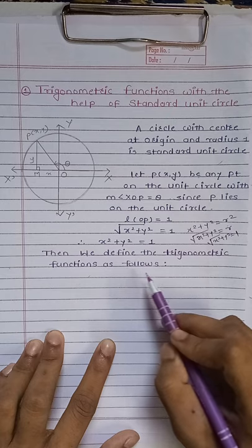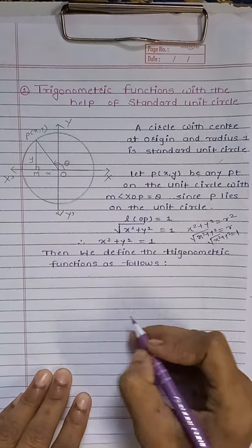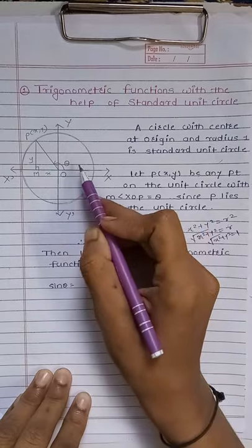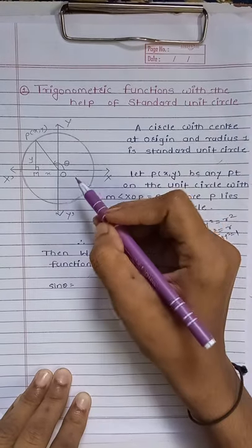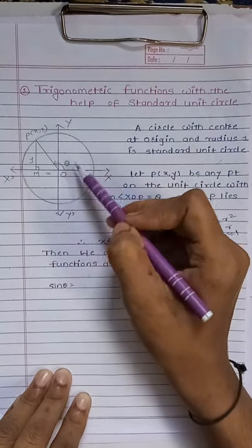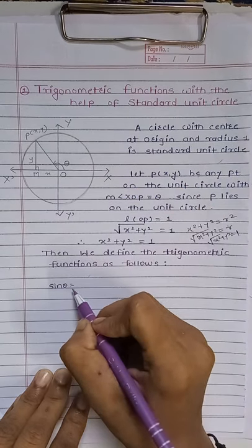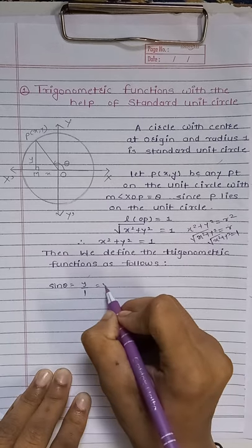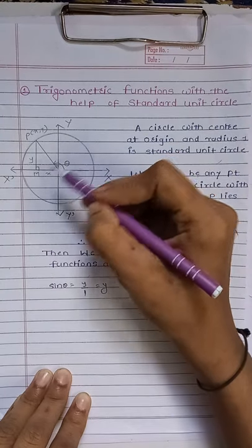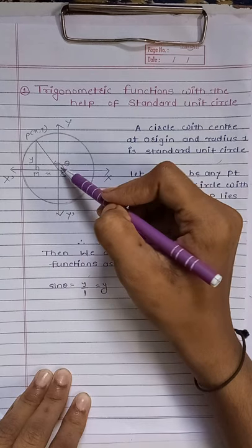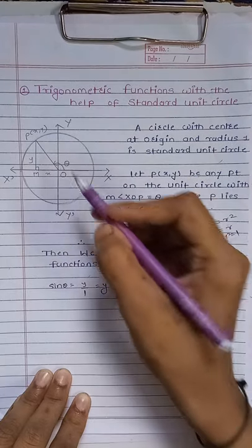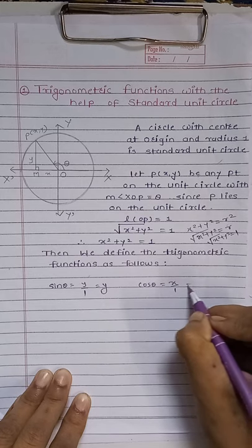Then we define the trigonometric functions as follows. Sine theta equals the opposite side of angle theta upon hypotenuse. The opposite side is Y and the hypotenuse is 1 — the radius of this unit circle. So the value of sine theta is Y upon 1, which equals Y. Similarly, cosine theta is the side adjacent to angle theta upon hypotenuse. The adjacent side is X and the hypotenuse is 1, so cosine theta equals X.